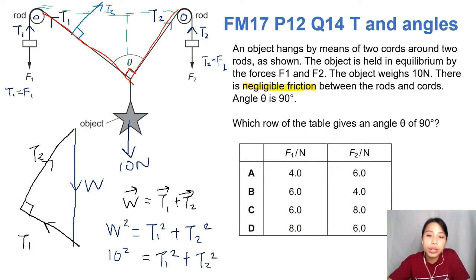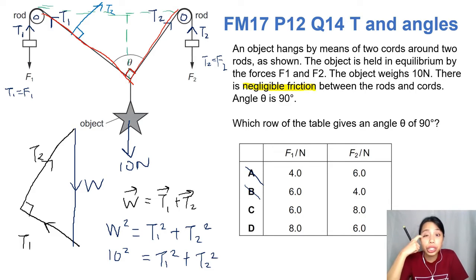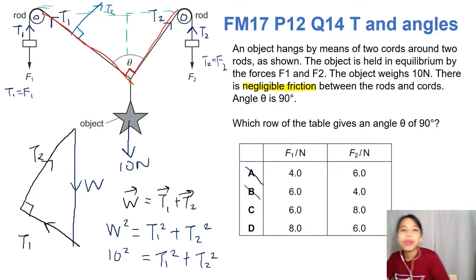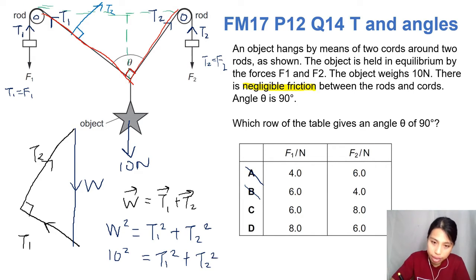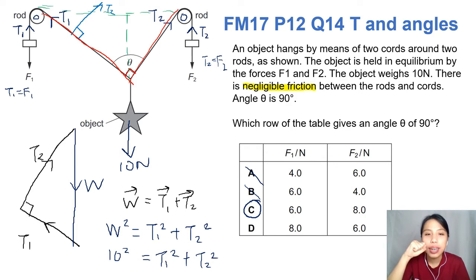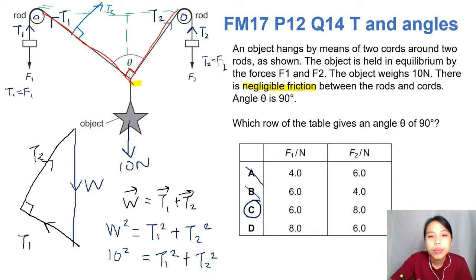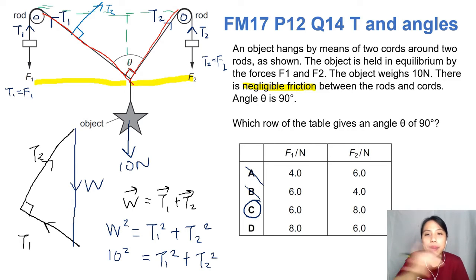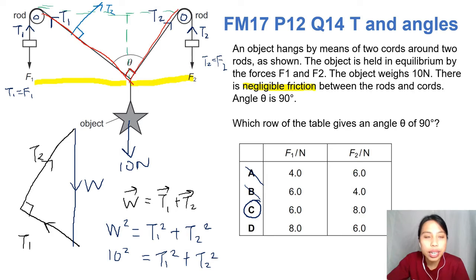So eight and six — which is which? Which one will have a larger tension? In this case, T2 will actually have the larger tension, so this will be row C. Why is that? T2 is much closer to the pulley or the rod, whereas T1 is quite far away from the rod. So for an unbalanced angle where both side angles are different, if the object is nearer to the rod on the right, then that one will have the larger tension. Let's take a look at the simulation again.